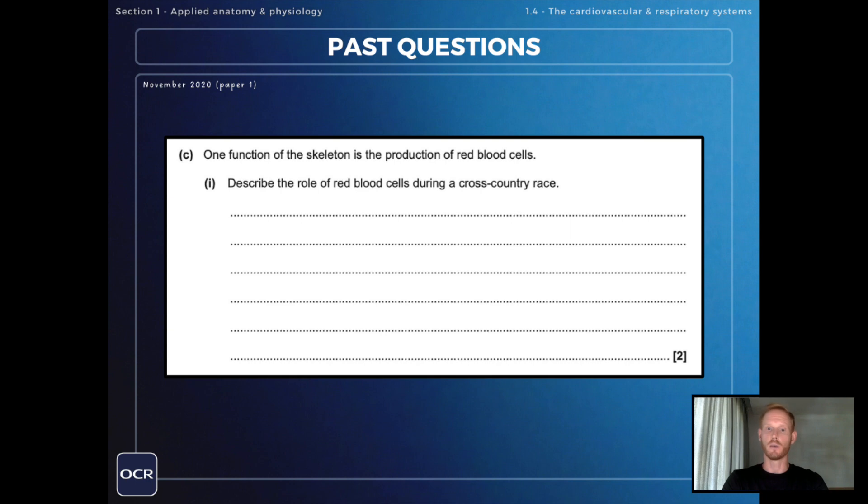One function of the skeleton is the production of red blood cells. Describe the role of red blood cells during a cross-country race. I've put here that red blood cells transport oxygen from the lungs to the working muscles and carbon dioxide from the muscles to the lungs. And you need to put down both of these points to get the two marks.